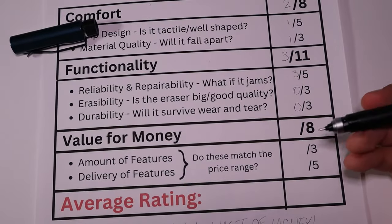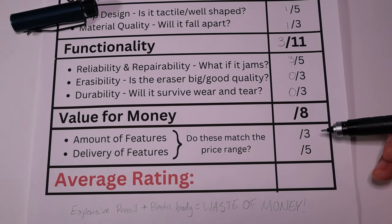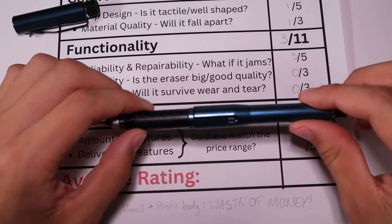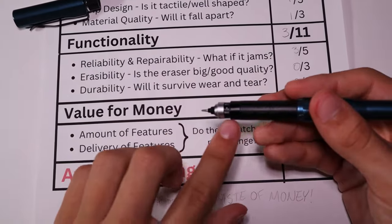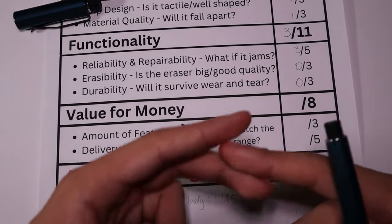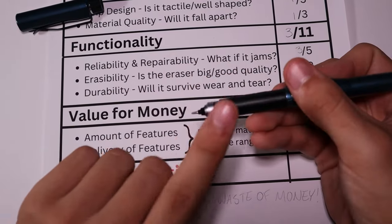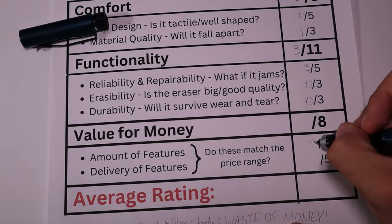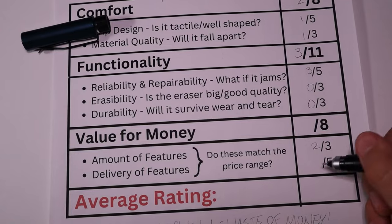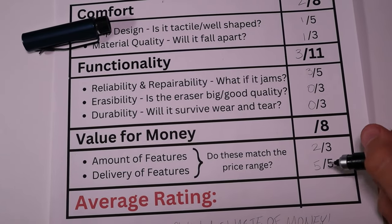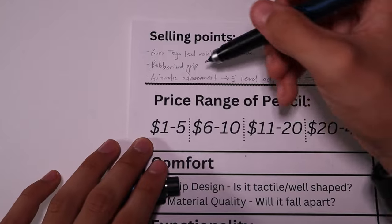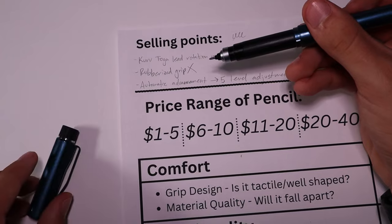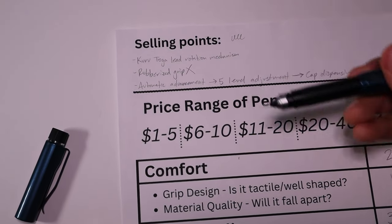Finally value for money. Besides the tip mechanics the pencil is pretty average, nevertheless it's super impressive cramming of so many features like automatic advancement, adjustability, Kuruttoga, and the cap mechanism into this small area and that's basically what you're paying for for the whole pencil. So it's going to get a two out of three for the amount of features and actually a five out of five for the delivery because what it said it would do, good, except for this rubberized grip which I'm just going to put an X next to because it's pointless - it's just fancy marketing term for regular plastic grip.